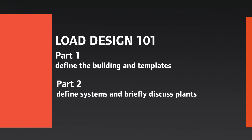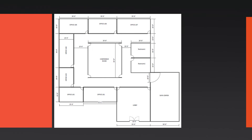Then in Part 2, we will move on to define systems and briefly discuss plants. We will follow an example throughout this video, putting to practice what we learned. To follow along with the example, please visit our CDS website and save the two documents that will be used. The background information for the example is listed in the document Load Design 101 Exercise Information. The Load Design 101 Floor Plan image will be imported and used to draw the building for the example. Please save this image in an easy to find folder.